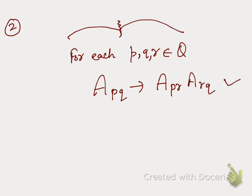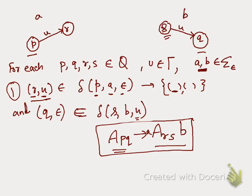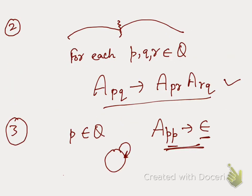We need not consider what input alphabet or stack symbol is involved for this second rule — we simply write it this way. Third, for each state p, we add A_pp → ε, meaning if you are at a state and remain at the same state while reading nothing from the input tape, that is trivially accepted. With these three productions, you can generate the grammar corresponding to a PDA.